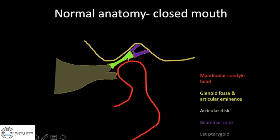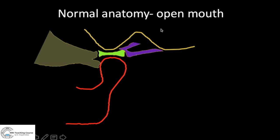The main thing we are evaluating is the articular disc: what is its shape, what is its size, is it normal, and more importantly, what is its location? This assessment is done in closed mouth. What happens when somebody opens the mouth?